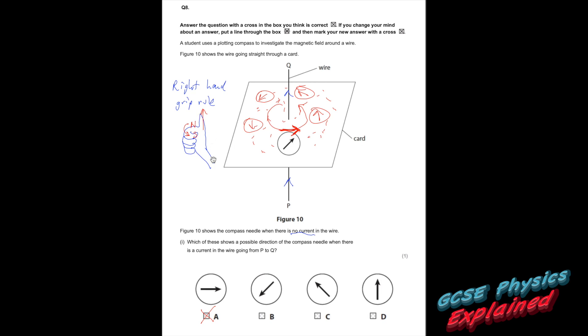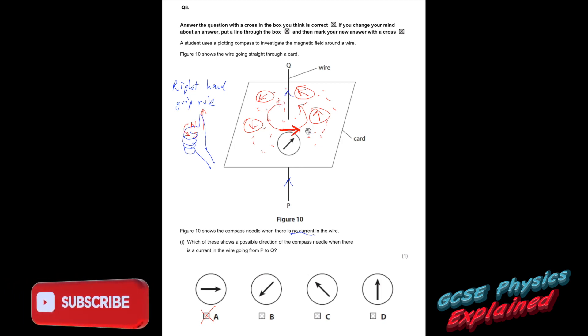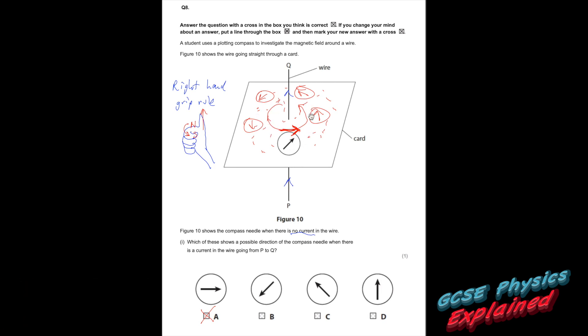This is the right hand grip rule. So if you were to put your hand like that with your crazy sausage fingers. Your thumb shows the direction of the current and your fingers would show the direction of the magnetic field. Knuckles are north, fingertips are south. So if you were looking down on the top of your hand, the field would be going anti-clockwise. So put your thumb going up from P to Q. Curl your fingers around. So the magnetic field, once there is a current in the wire, would be going anti-clockwise. So this compass is going to start pointing to the right. So the answer is A.